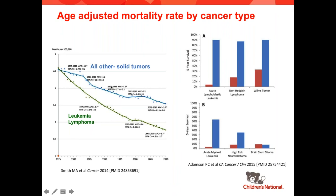The majority of improvement has come from Wilms tumors and low-risk tumor populations. Although there has been some improvement with AML and high-risk neuroblastoma, there is virtually no improvement with brainstem glioma, and very little improvement with metastatic solid tumors and sarcomas.